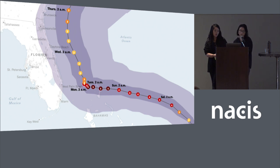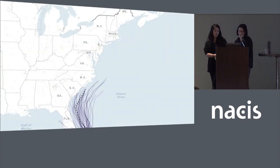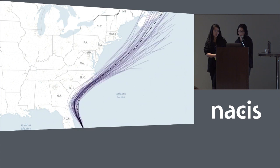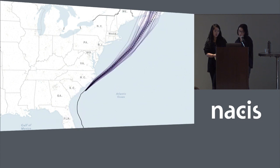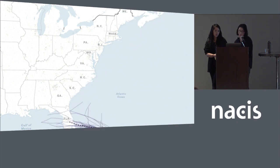With this setup for our hurricane page we produced a lot of different maps — for example, the track of the hurricane. We can also animate models of the hurricane over time, and that's all just vector data.